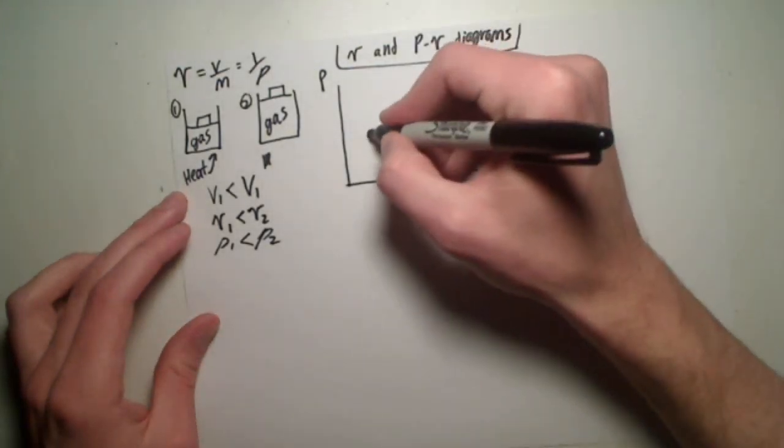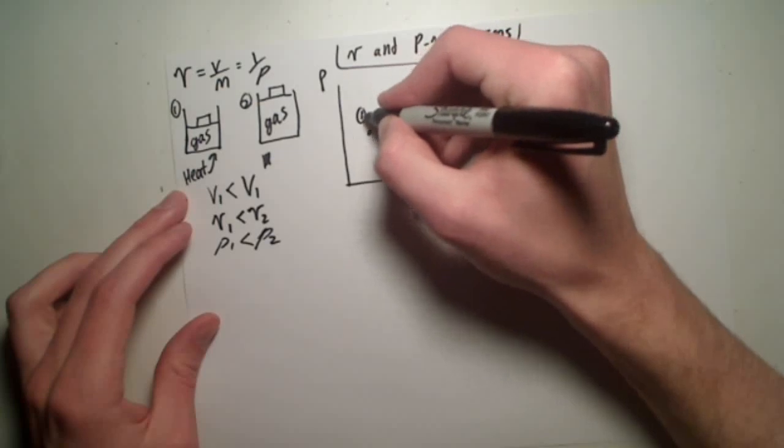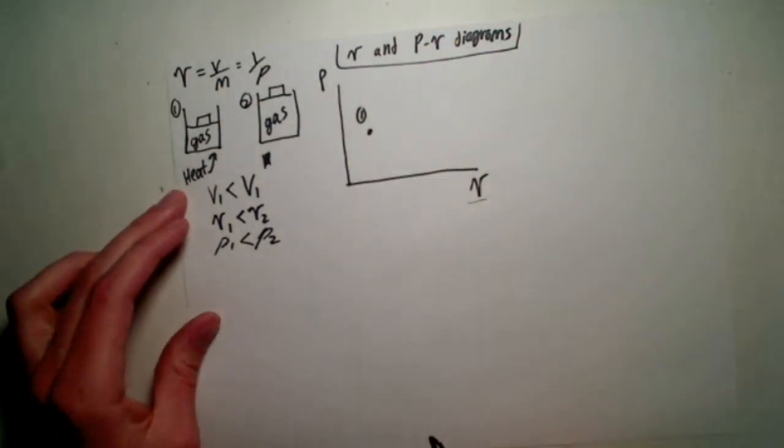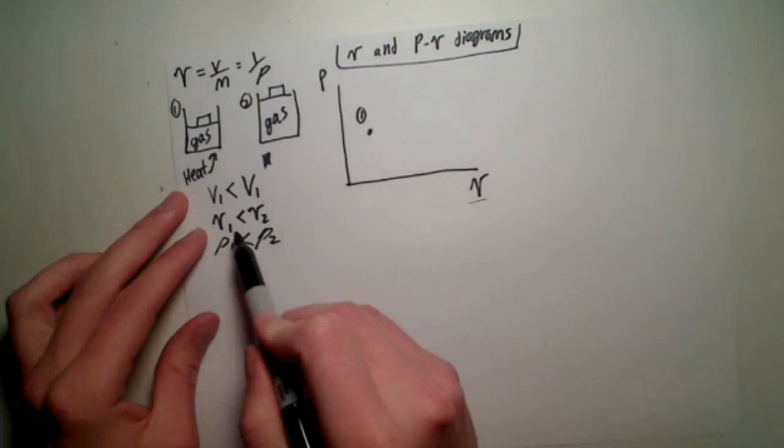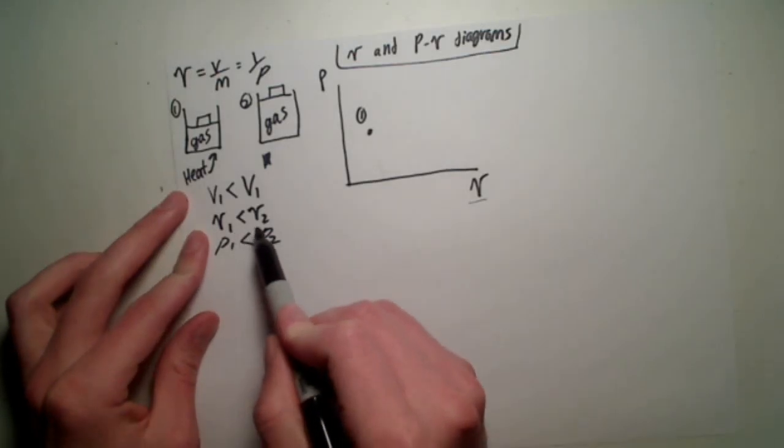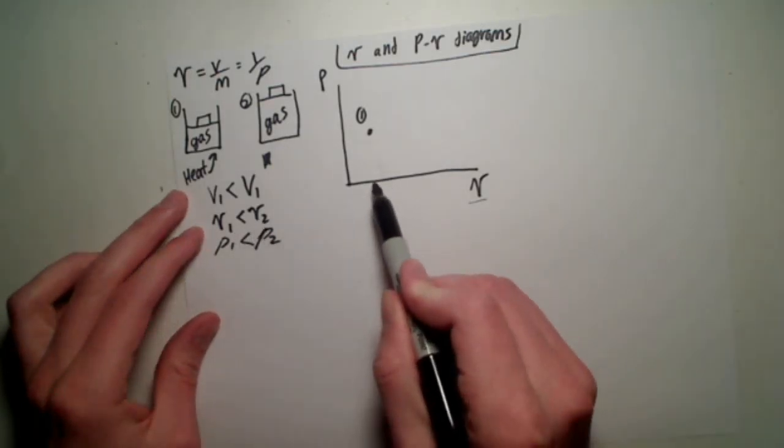So in this, let's just say this is the first state. It has some pressure and some specific volume. Now I already said that the specific volume increases, so we know that state 2 is going to be somewhere to the right.